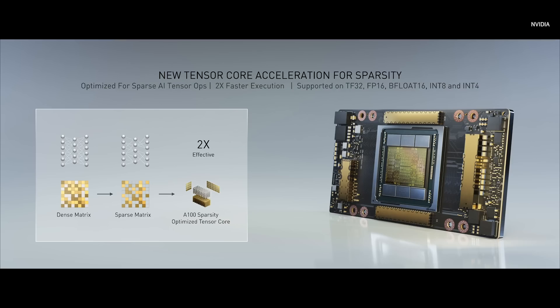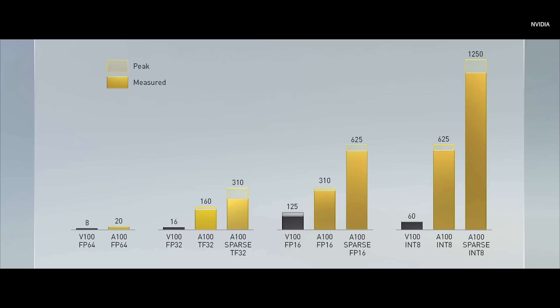A100 FP64 is 20 teraflops. A100 TF32 is 160 teraflops — ten times. In the case of FP16, 310 teraflops. In the case of Int8, 625 teraflops peak.